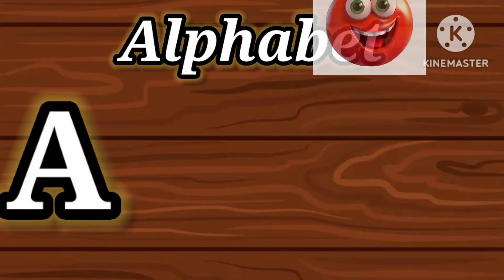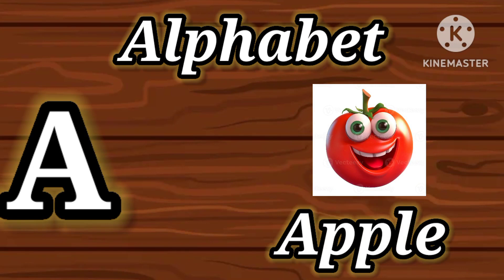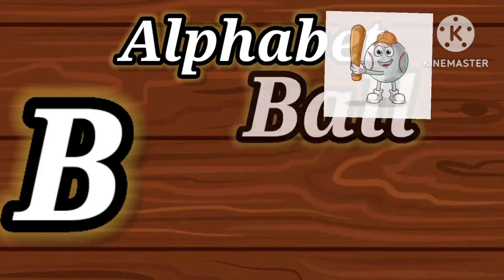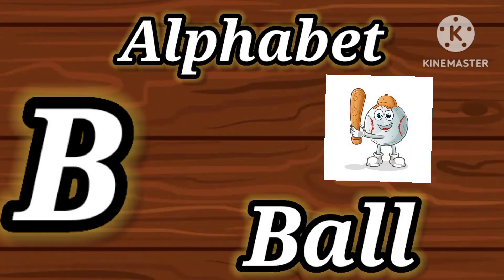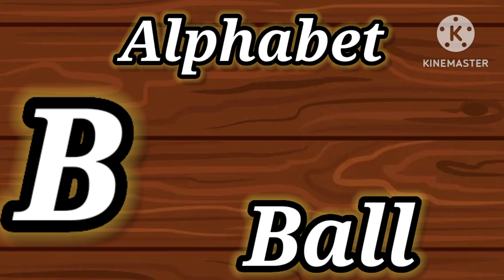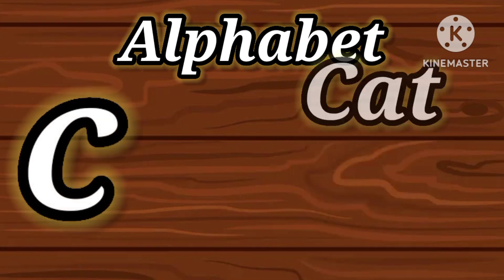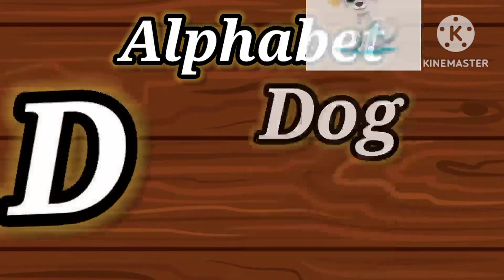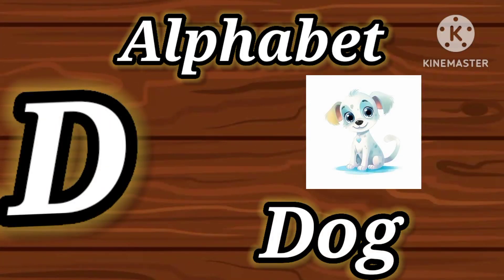Alphabet A for Apple. A-P-P-L-E, Apple. B for Ball. B-A-L-L, Ball. C for Cat. C-A-T, Cat. D for Dog. D-O-G, Dog.